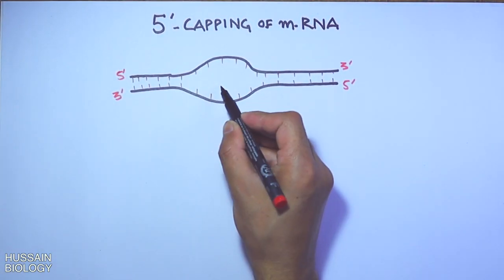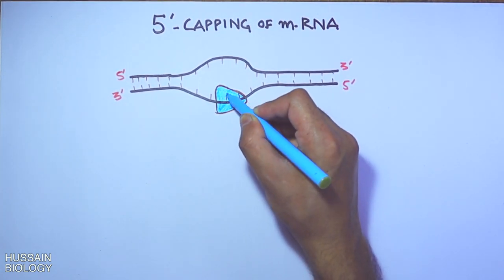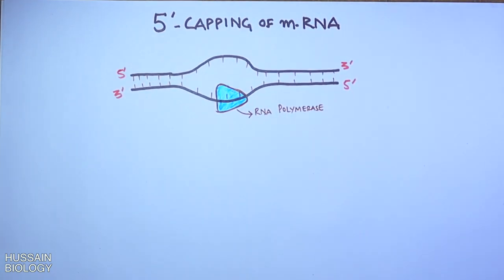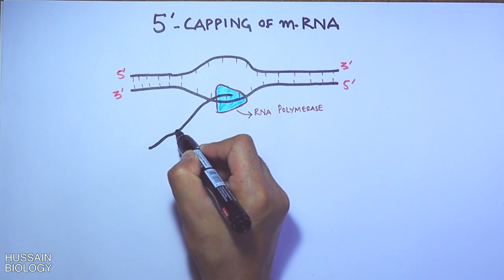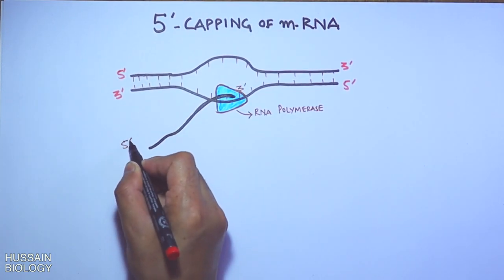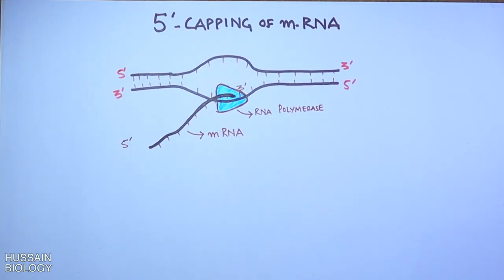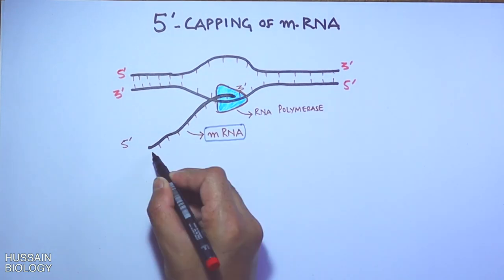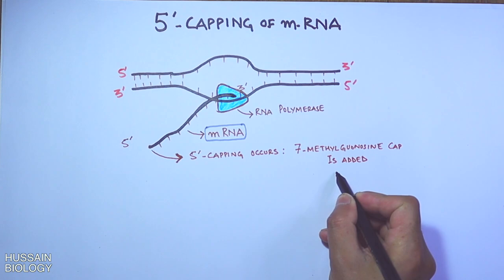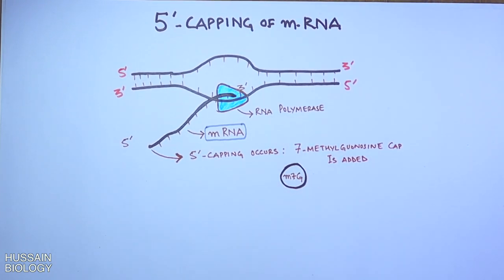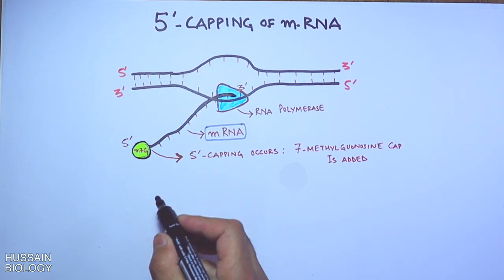This RNA polymerase enzyme works on the 3 prime to 5 prime end of the DNA strand and synthesizes a newly formed strand in the 5 prime to 3 prime end, what we call the mRNA strand. And to this 5 prime end the capping occurs. It is the 7-methylguanosine cap shown in the diagram which is added just after transcription starts, so we can say capping is a co-transcriptional process.